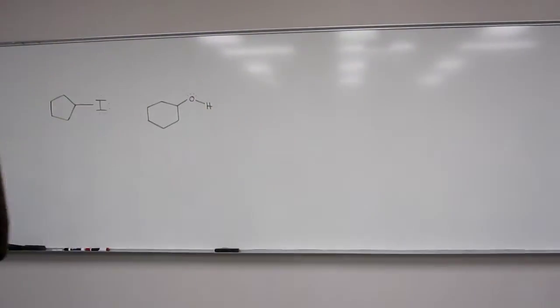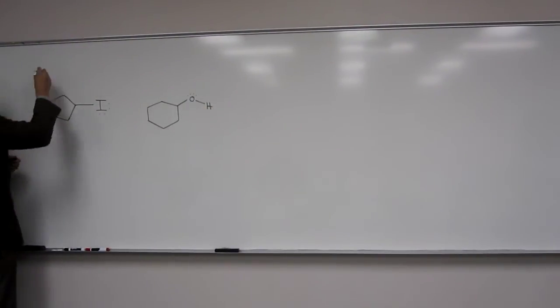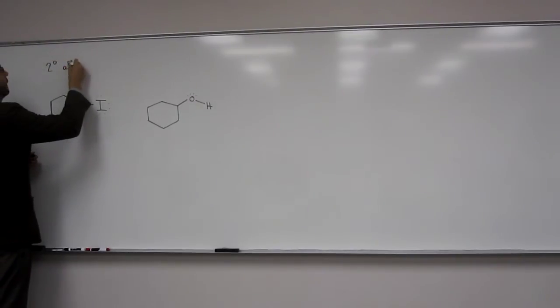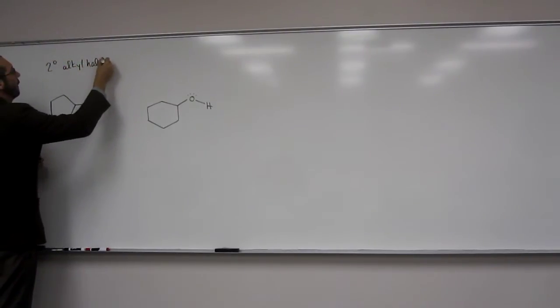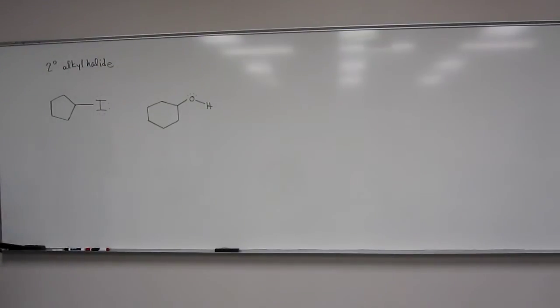Okay, so this is a secondary alkyl halide. And that's good because we know primaries don't go through SN1 reactions. So it has to be either a secondary or a tertiary to do it. You also have to have, remember, a polar protic solvent, something that's going to pull the iodide from the alkane portion of the alkyl halide. So it's going to help it separate.